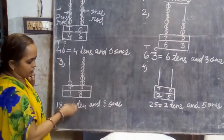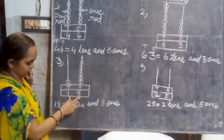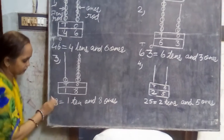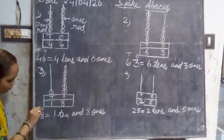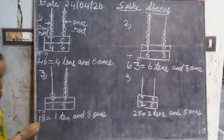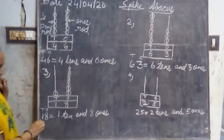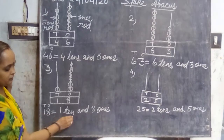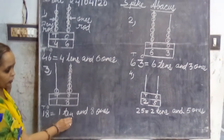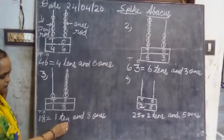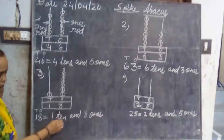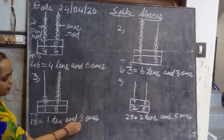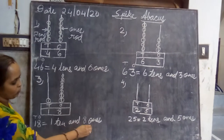Now the number found is eighteen. So we will write here ones and here tens. We will read the number as one ten and eight ones.